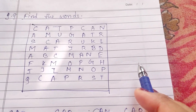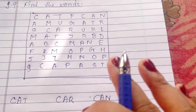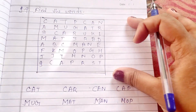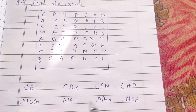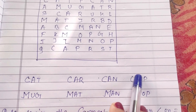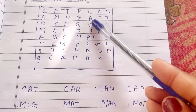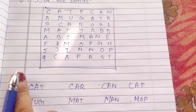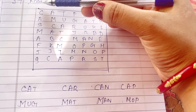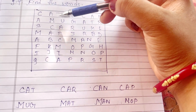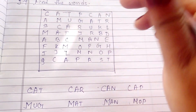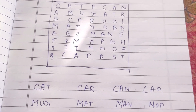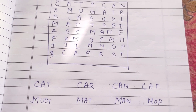Agla worksheet hai 'Find the words'. Yahan pe maine bahut saare alphabets/letters ko yahan jumble kar diya hai aur yahan pe kuch words diye hue hain jisse aapko yahan find out karke circle karna hai. Jaise C-A-T, cat - so here is C, A, T, cat, to yahan isko circle karna hai. Is tarike se jo words chhuppe hue hain unhe find out karke circle karna hai.